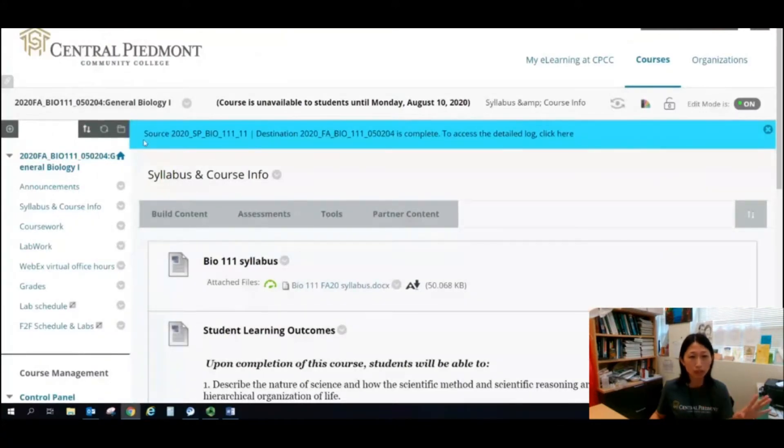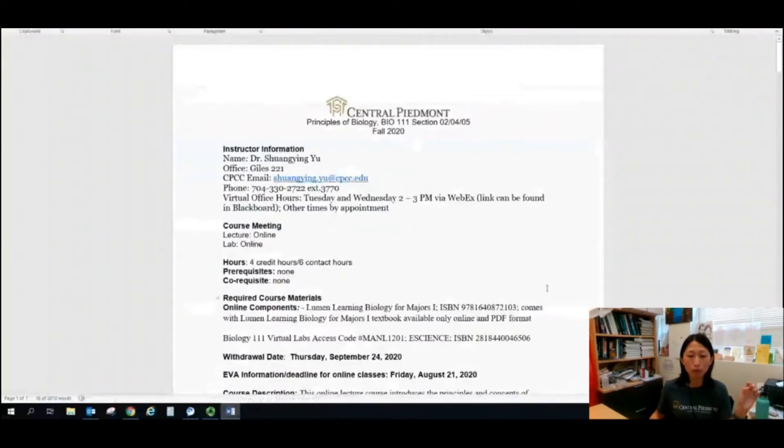So this is what you will see on Blackboard, right? So just go to the left side where it says syllabus and course information. This is where you can download the syllabus. So I already have one open.